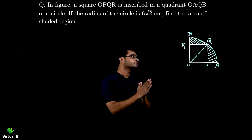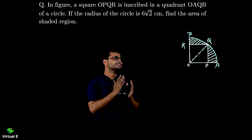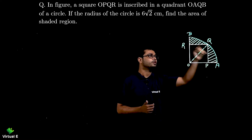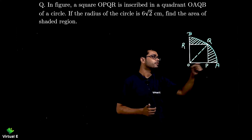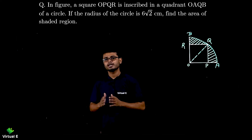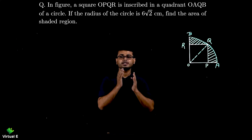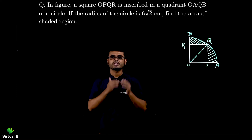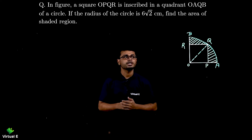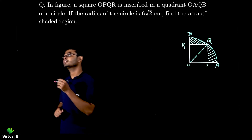We need to find the area of the shaded region. The steps are: first find the area of the quadrant, then find the area of the square, and subtract. We also need to check if any quantity is missing. Previously the radius was missing and we found it using the Pythagorean theorem by relating the diagonal of the square to the diameter of the circle.